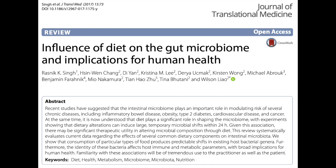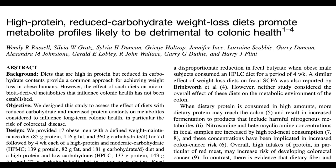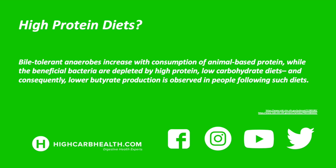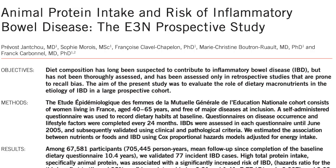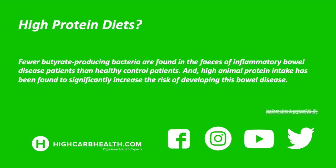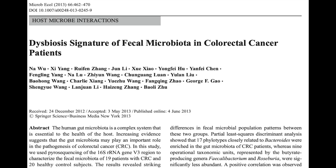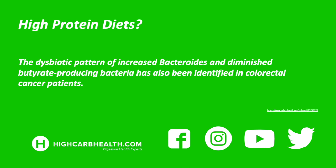So that shows us that eating plants and high-fiber diets abundant in MACs are extremely beneficial for our gut microbiome, while high-fat diets aren't. But what about high-protein diets? Bile-tolerant anaerobes increase with consumption of animal-based protein, while beneficial bacteria are depleted by high-protein, low-carbohydrate diets, and consequently lower butyrate production is observed. Fewer butyrate-producing bacteria are found in the feces of inflammatory bowel disease patients than in healthy controls, and high animal protein intake has been found to significantly increase the risk of developing bowel disease.